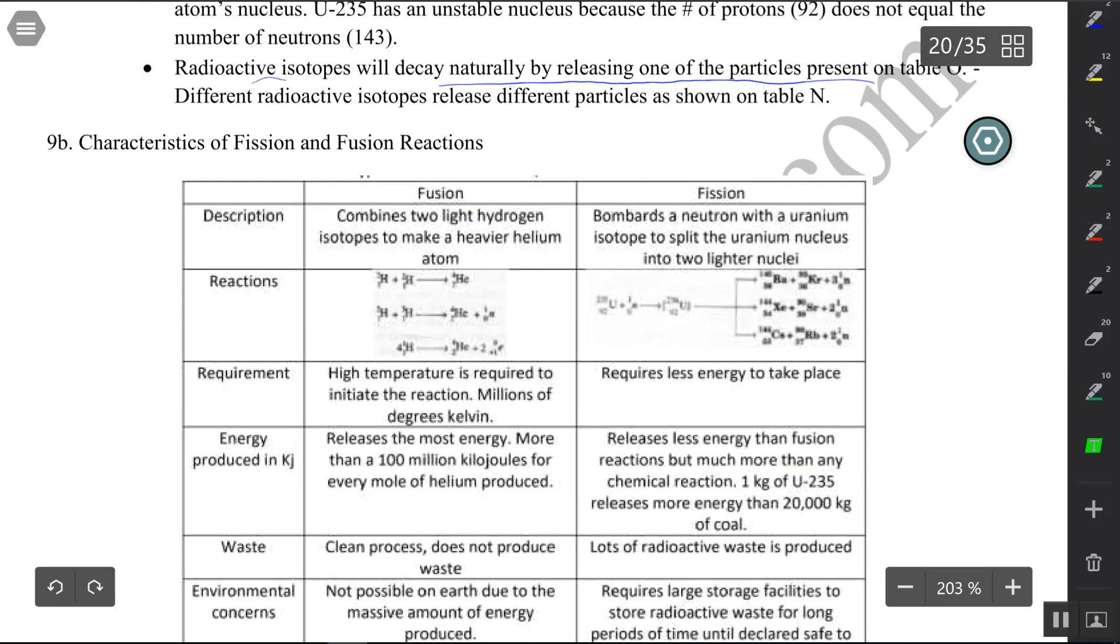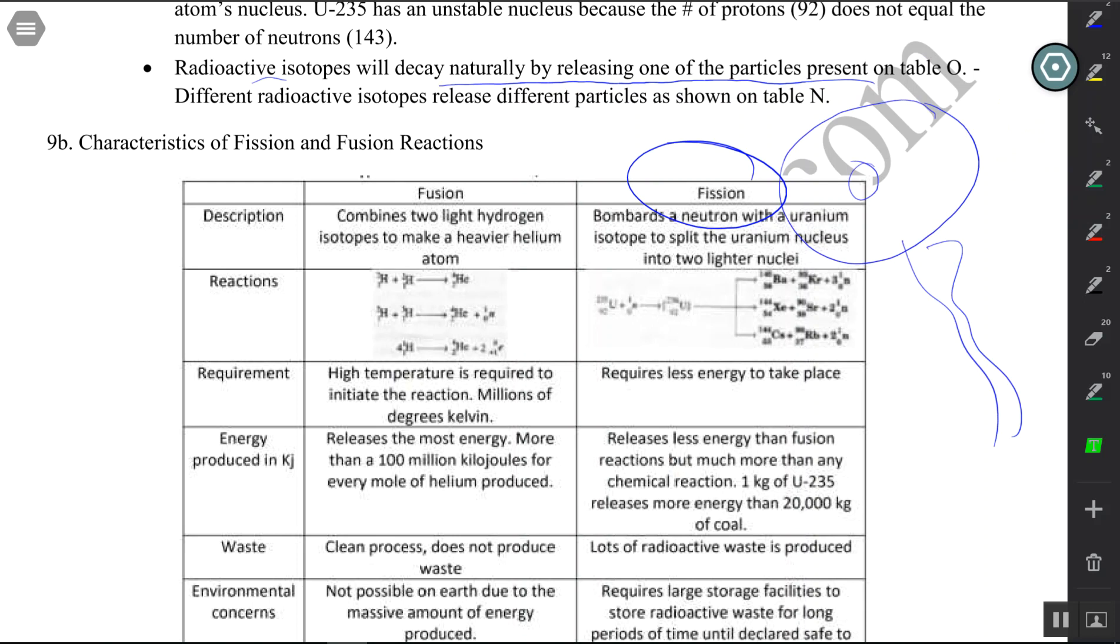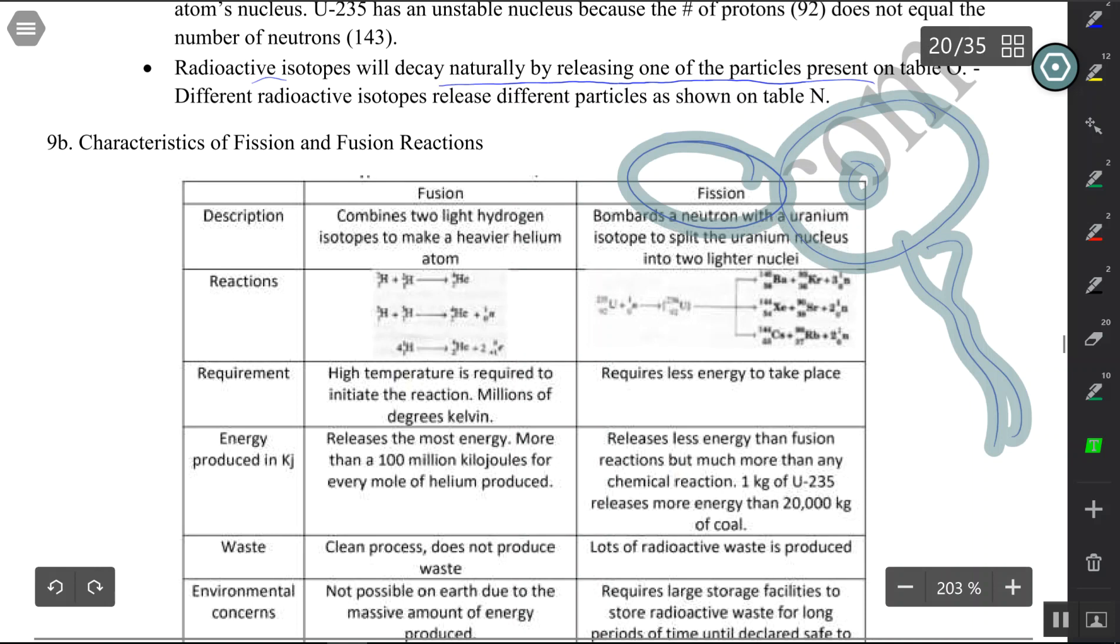Now let's talk about fission and fusion. Fission is actually the process that is used here on earth to generate enough heat that will turn generators and create electricity. I believe Indian Point in New York - if you can get a tour to Indian Point - you'll be able to see how we use nuclear chemistry to create electricity. Let's talk about the difference between fission and fusion.